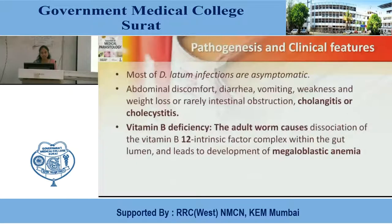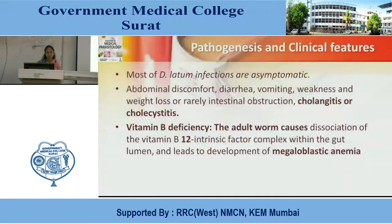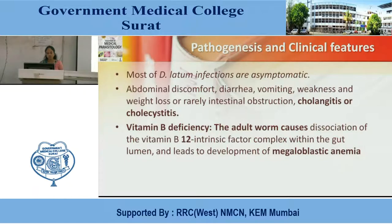Pathogenesis and clinical features. Most infections are asymptomatic, like abdominal discomfort, diarrhea, vomiting, weakness and weight loss, or rarely intestinal obstruction, cholangitis, or cholecystitis. Vitamin B12 deficiency is also present due to dissociation of the vitamin B12–intrinsic factor complex within the gut lumen, leading to development of megaloblastic anemia.